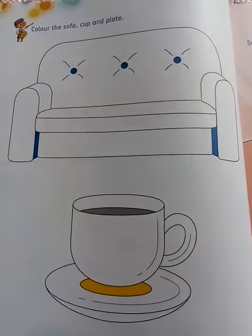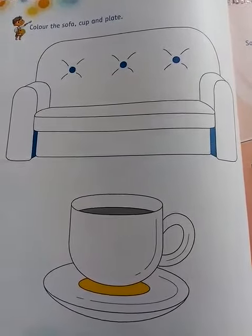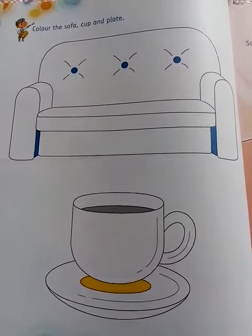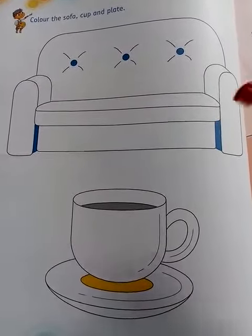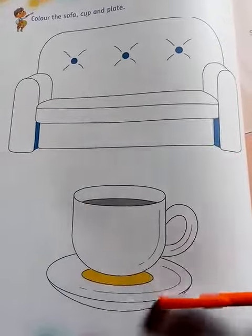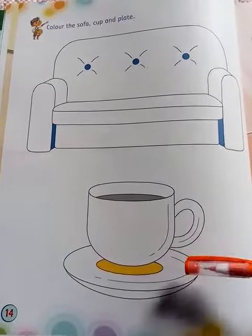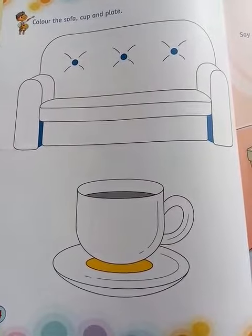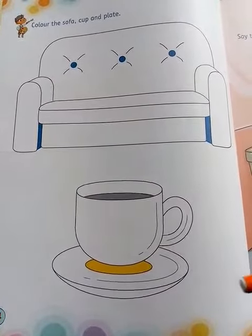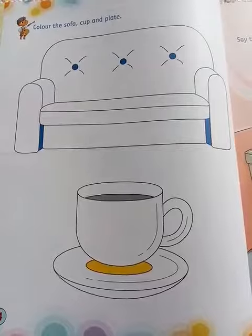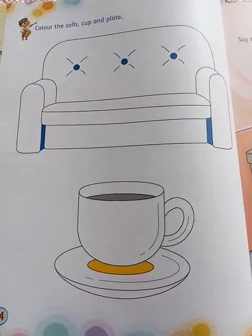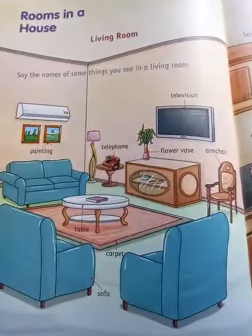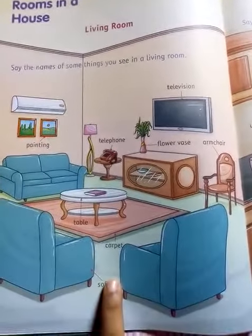Hello kids, open your environmental science book. Today we will color the sofa and cup plate. Open page number 14. Before we start today's work, first we will revise the previous two chapters. What is this? First, living room, then kitchen.